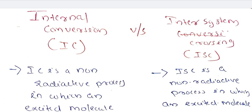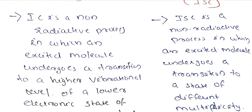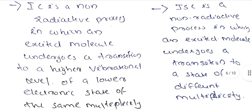We have discussed internal conversion and inter-system conversion. Internal conversion is a non-radiative process in which excited molecules undergo a transition to a higher vibrational level of a lower electronic state of the same multiplicity. This is a radiative process — this is an excited molecule.